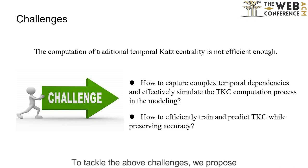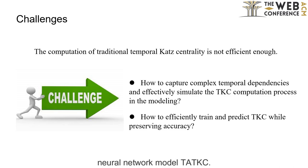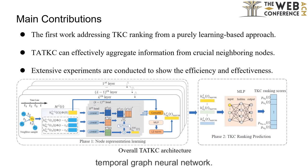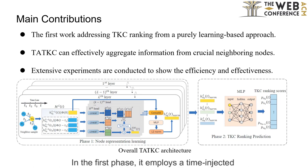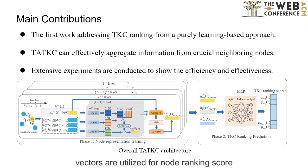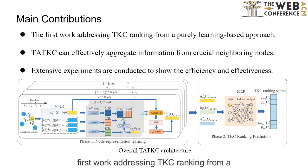To tackle the above challenges, we propose an efficient and scalable temporal graph neural network model, TATKC. The proposed model TATKC is a two-phase temporal graph neural network. In the first phase, it employs a time-injected self-attention mechanism to learn node representations, mirroring the TKC calculation process. In the second phase, the learned embedding vectors are utilized for node ranking score predictions. To the best of our knowledge, we are the first work addressing TKC ranking from a purely learning-based approach.